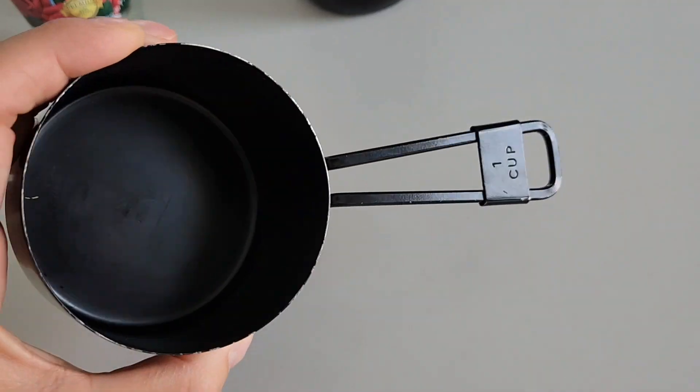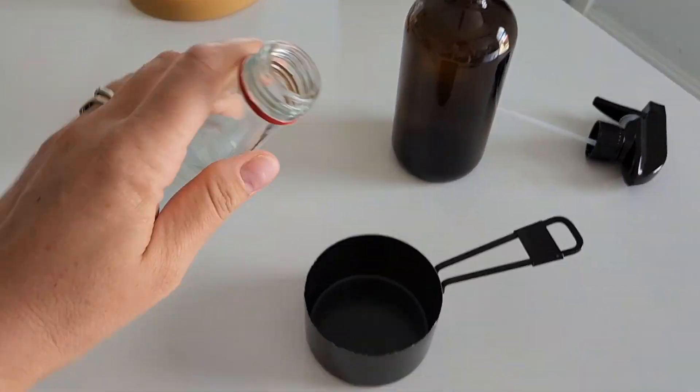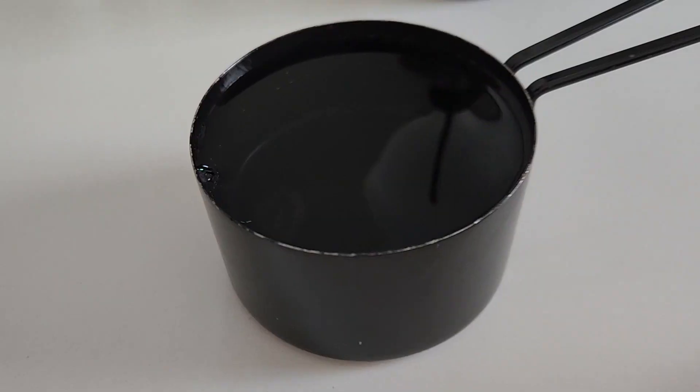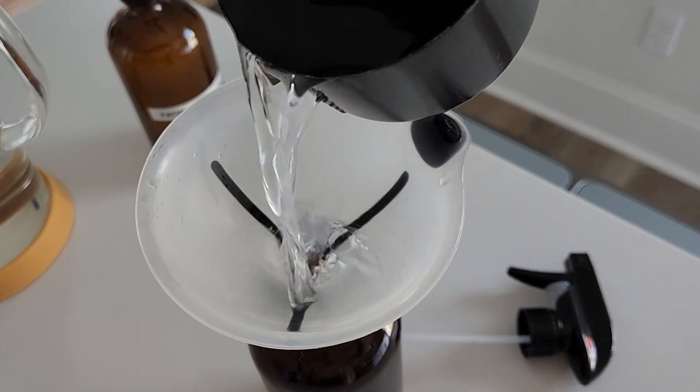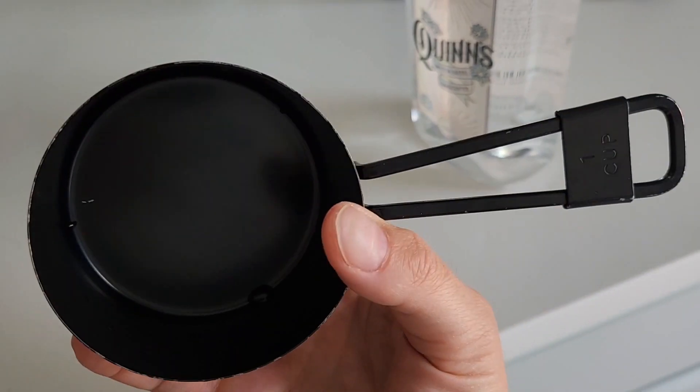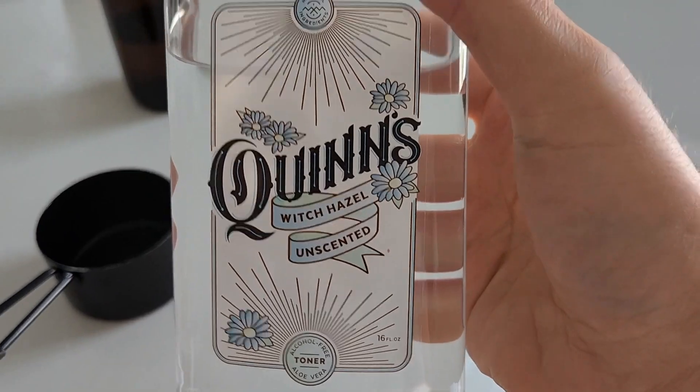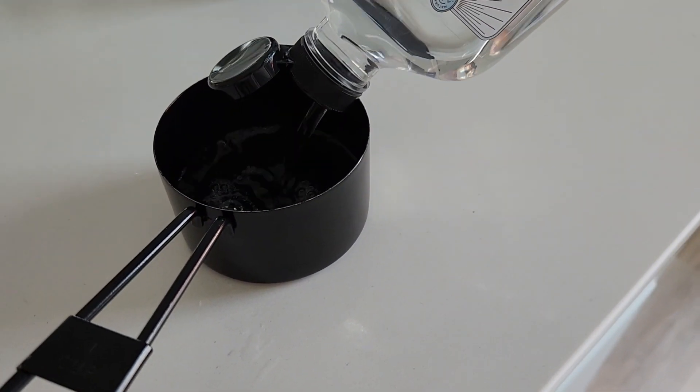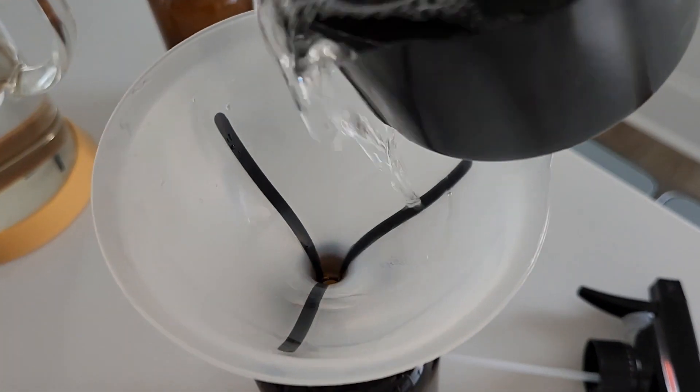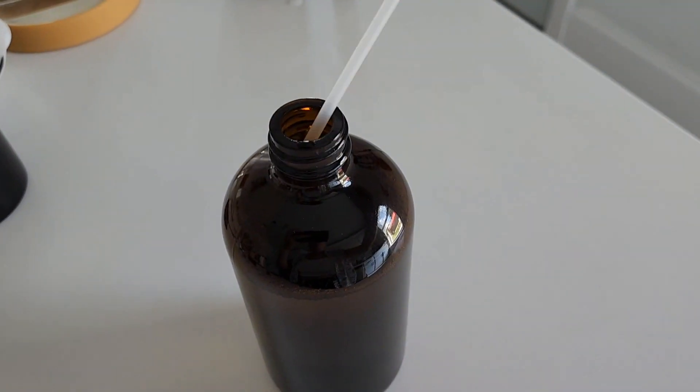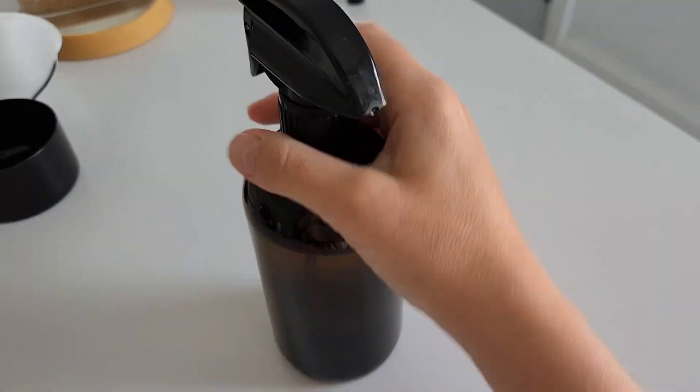Now here's a recipe for the toner. One cup of rose water. Rose water soothes inflammation, balances pH levels, and promotes a refreshed complexion. And one cup of witch hazel. Witch hazel toner tightens pores, controls oil, soothes irritation, and promotes a balanced complexion. That's it. It's very simple. Just one to one.